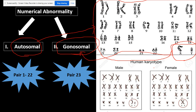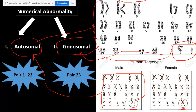Now I want you to take a look at another karyotype for healthy and normal individuals — the same concept. If the abnormality was from pair 1 to 22, it's called autosomal. If it was in the last pair, which is XY or XX in the case of a female, it is called gonosomal abnormality. We're going to be studying some famous autosomal abnormalities and some gonosomal abnormalities. Let's start with the autosomal abnormalities.